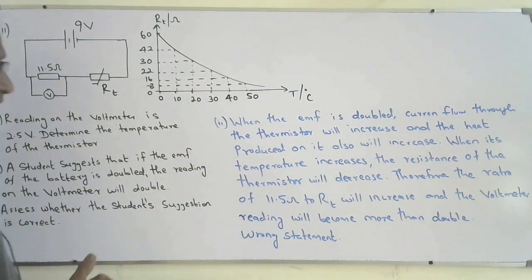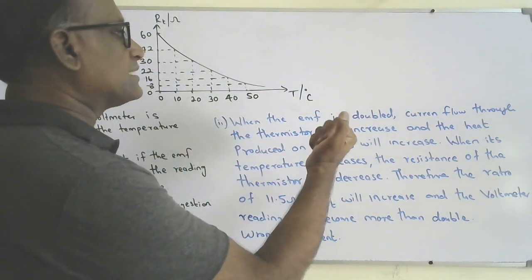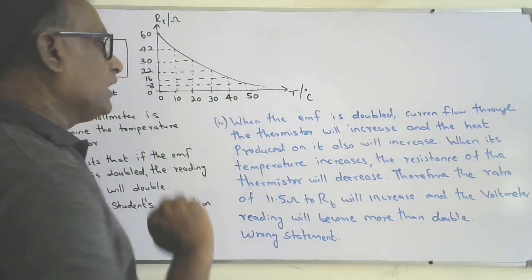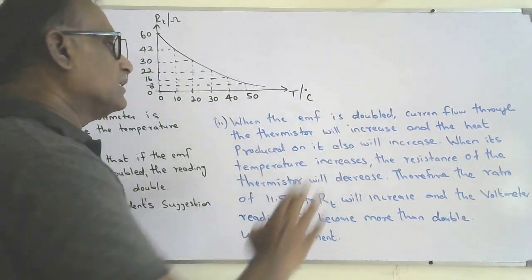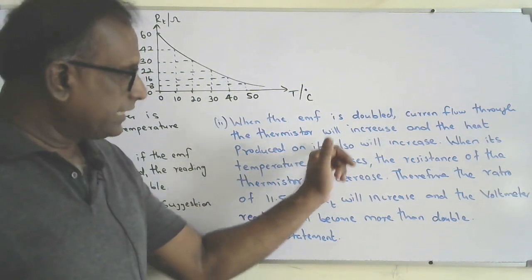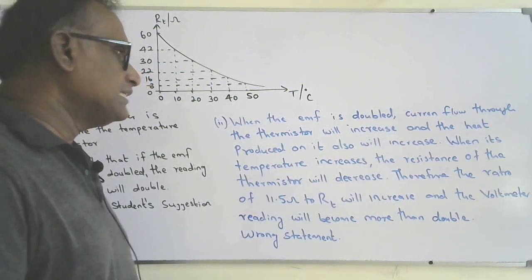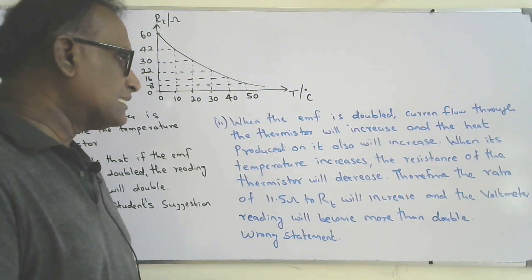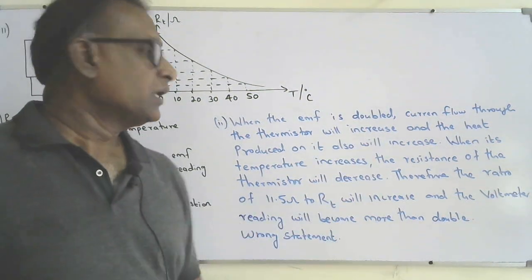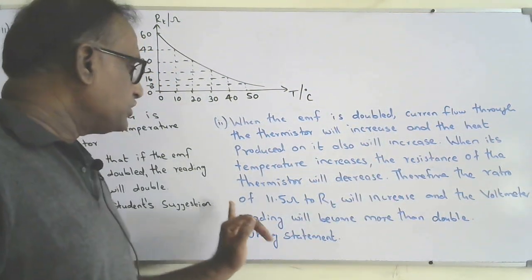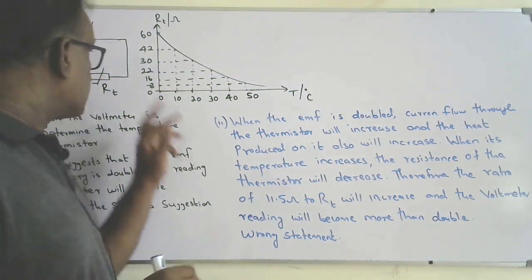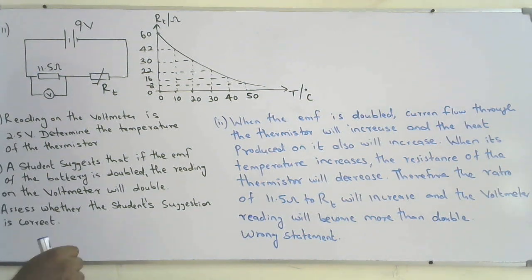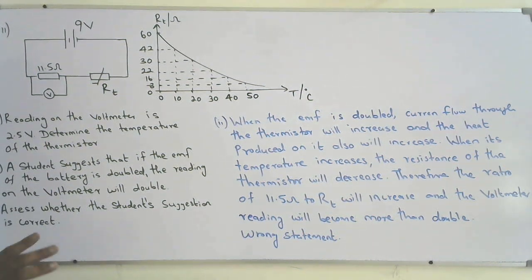When EMF is doubled, the current through the thermistor increases, heat produced increases, temperature rises, and the resistance of the thermistor decreases further. Therefore the ratio of 11.5 ohms to Rt increases because Rt is decreasing. Therefore the voltmeter reading will become more than double. The student's statement is wrong.